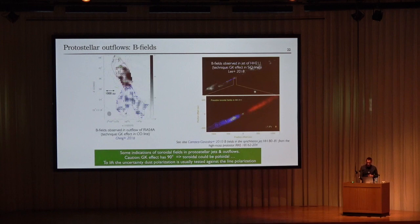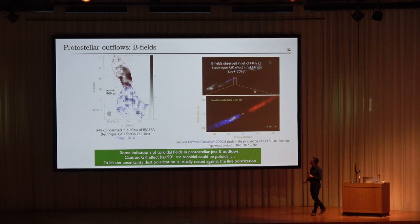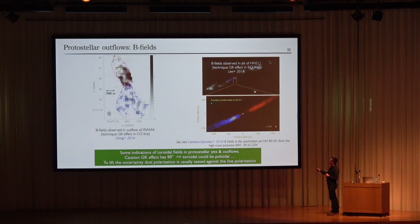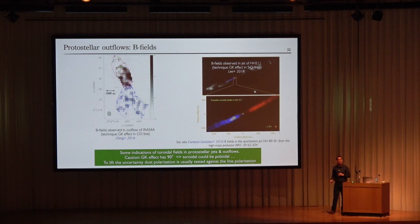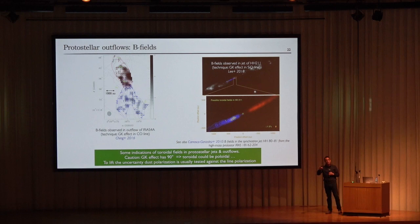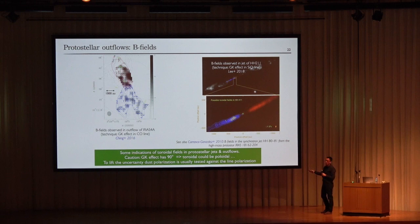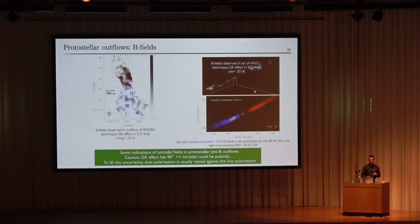A great observational achievement has been to observe evidence of magnetic field in outflows using the Goldreich-Kylafis effect. Ching et al. and Carrasco-Gonzalez et al. have observed evidence of poloidal magnetic field in outflows. The GK effect has a 90-degree ambiguity, so this should be confirmed using dust polarization, but if confirmed it goes in favor of magnetically driven outflow engines.